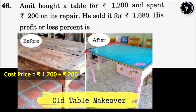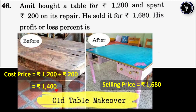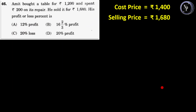The given data in the problem is: cost price is equal to Rs.1200 plus Rs.200. On adding, we get the total cost price as Rs.1400 and the selling price is equal to Rs.1680. On comparing the cost price and the selling price, we find that the selling price SP is greater than the cost price CP. Therefore, Amit must have gained some profit. The amount of profit can be found by subtracting the cost price from the selling price. On doing so, we get the profit as Rs.280.